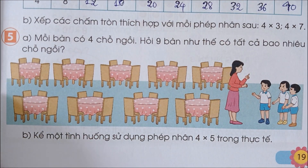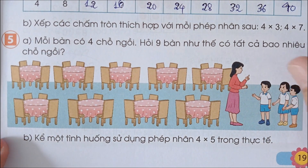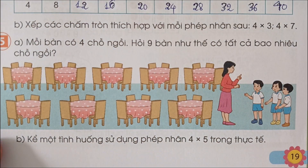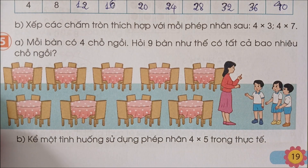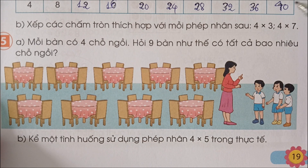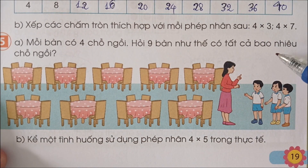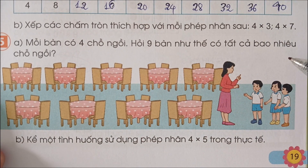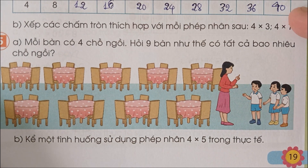Sắp xếp các chấm tròn thích hợp với mỗi phép tính sau: 4 x 3 và 4 x 7. Như vậy mình xếp mỗi hàng 4 biên. Này các em tự làm.